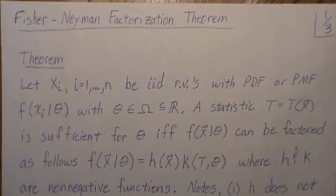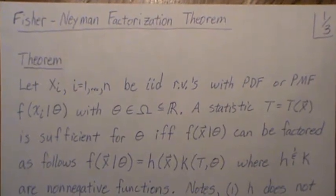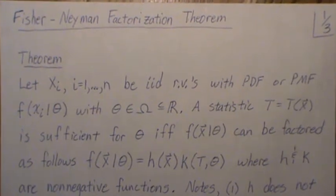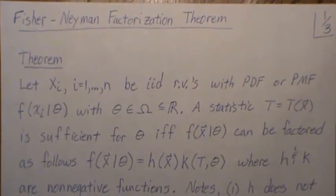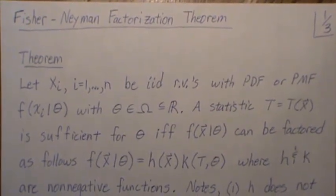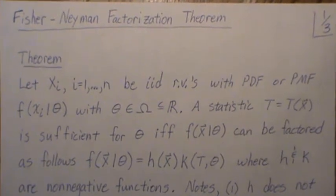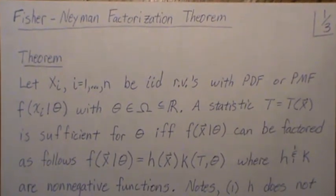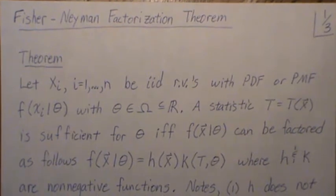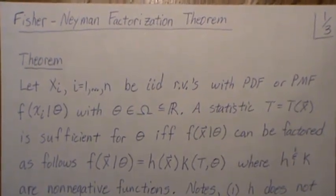Hello. This is the next video in a playlist that I'm calling Parameter Estimation. Here we're going to look at the Fisher-Neyman Factorization Theorem. This is a follow-up to a video I called Sufficient Statistic. There, to derive a sufficient statistic, we had to look at the conditional distribution of the data given the value of the sufficient statistic, and if it was independent of the parameter we're trying to estimate, then it was a sufficient statistic. But that whole process can be pretty darn tedious, and this Fisher-Neyman Factorization Theorem is a much easier approach to finding sufficient statistics than using the definition.